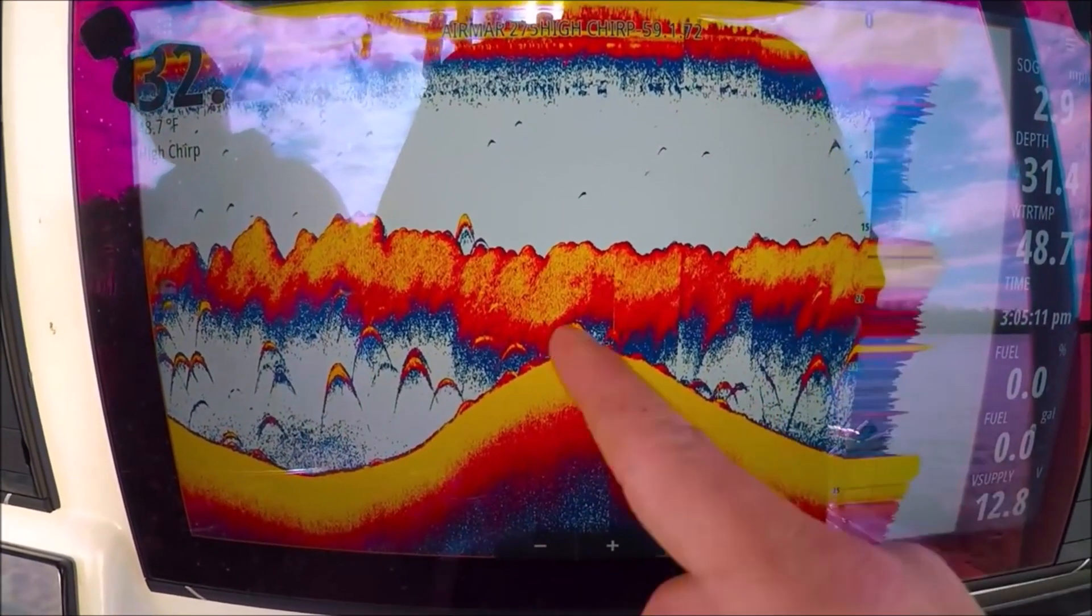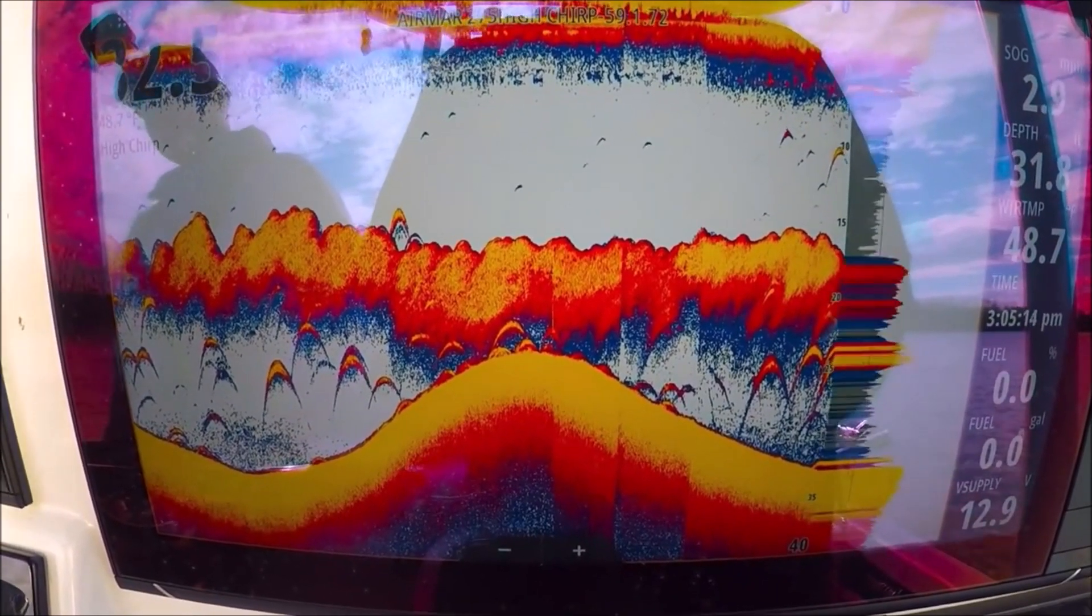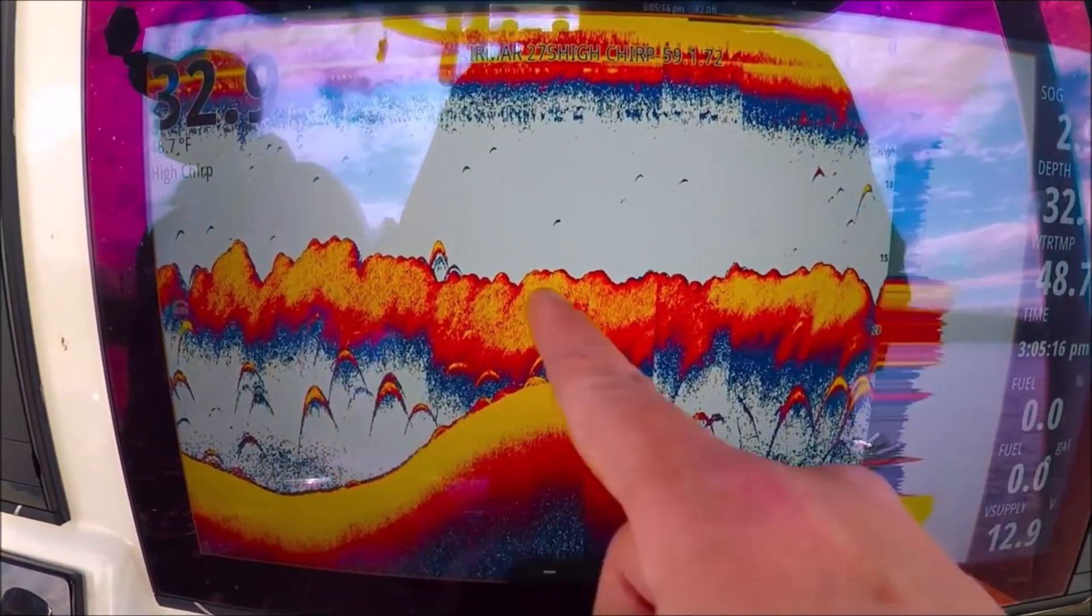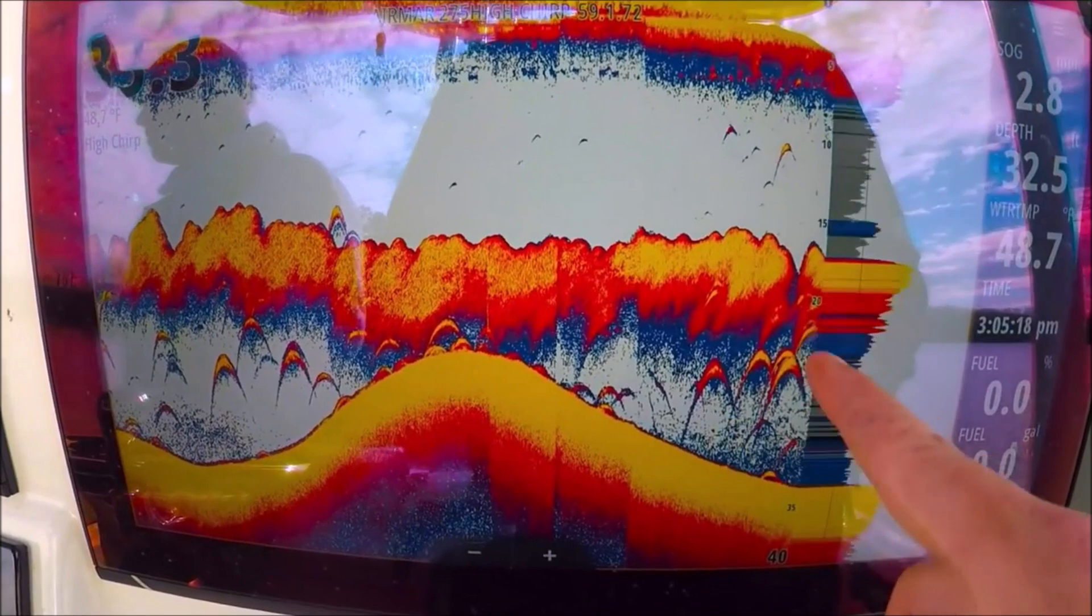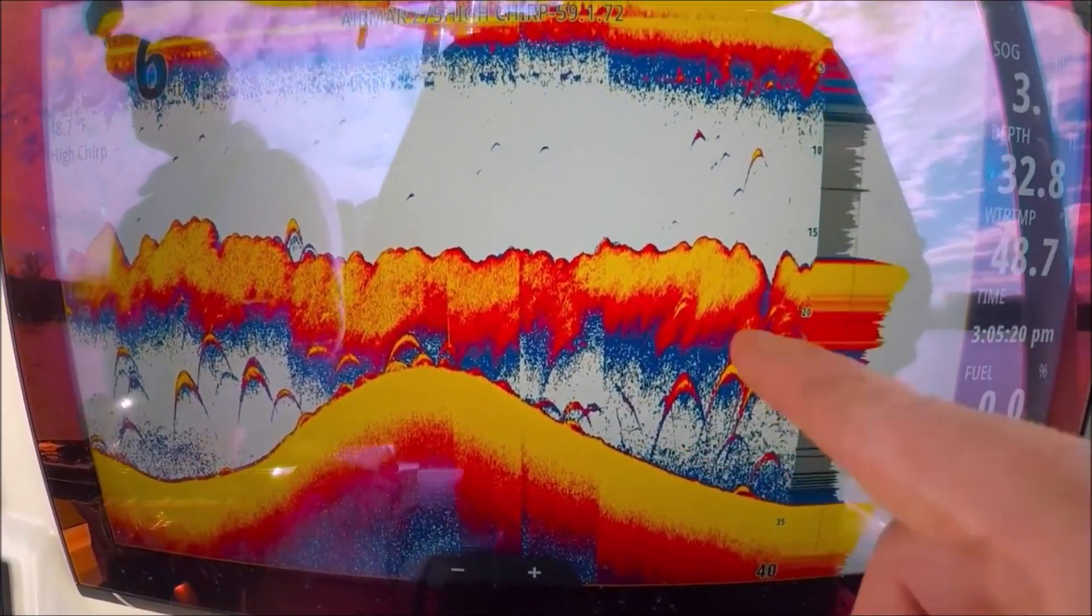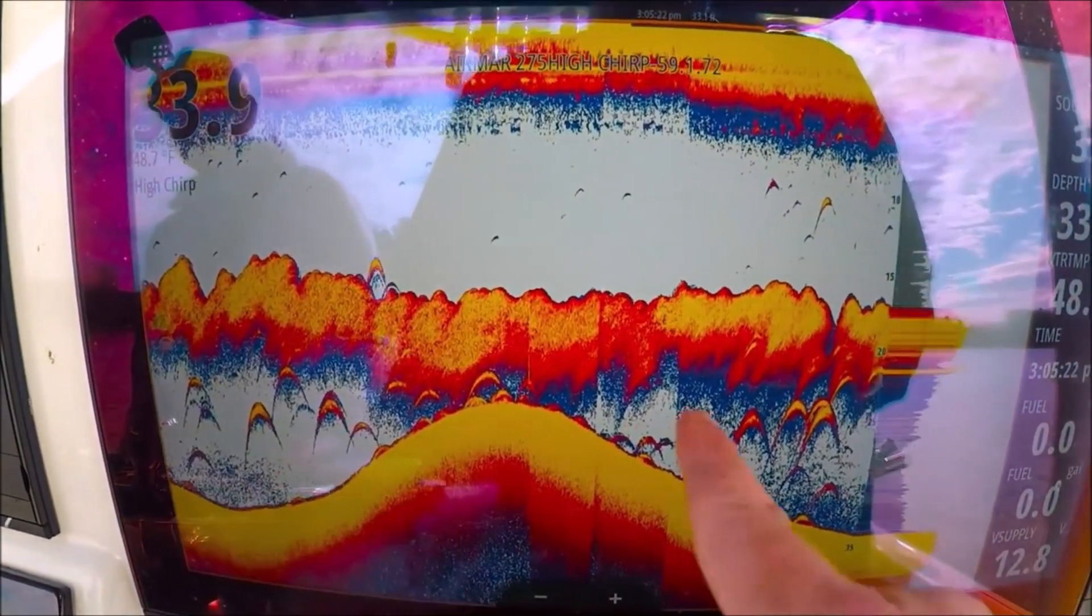You can clearly see the difference between the clouds of bait and the individual arches, which are the air bladders of these larger fish.